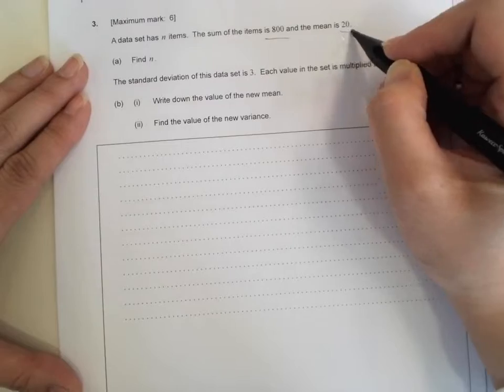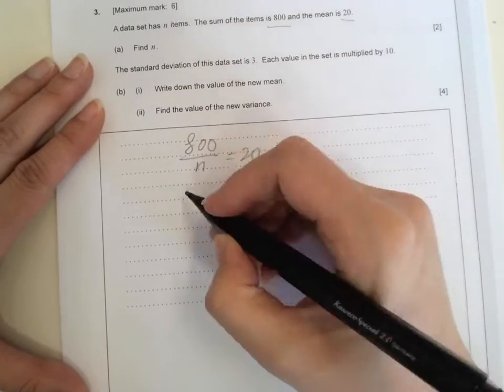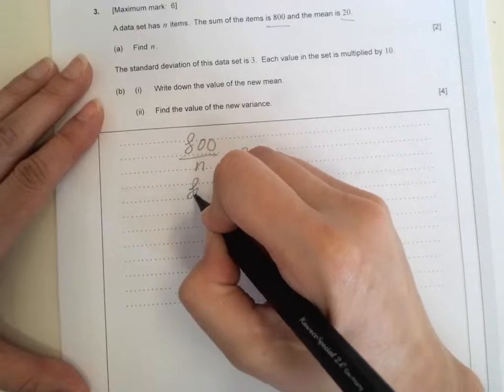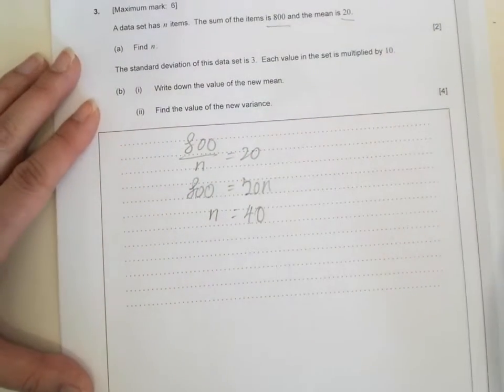So we need to find the number of data. We got the sum and the mean. So we have 800 divided by n should equal 20. So we throw it to the other side. N should be 40. Nice and easy, no brainer.